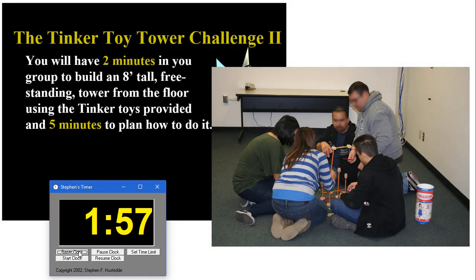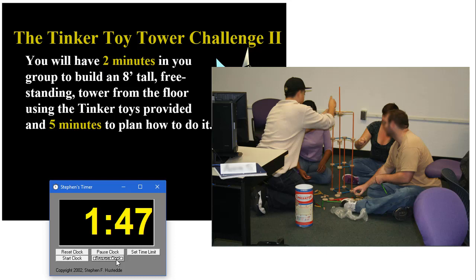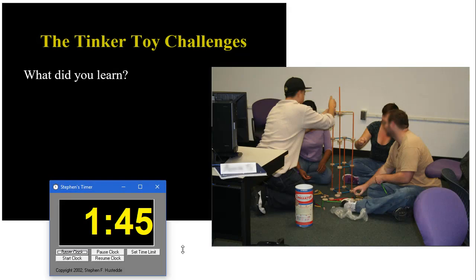And the amazing thing is that even though they have two minutes to build their tower, with that five-minute planning time, they're usually able to build their tower eight feet tall freestanding in the two-minute period. Whereas before, they said it couldn't be done in four minutes. They needed more time. When it's all said and done, we have a discussion on what did they learn. And, of course, the big learning experience out of this is the value of taking the time to plan before you start to build.